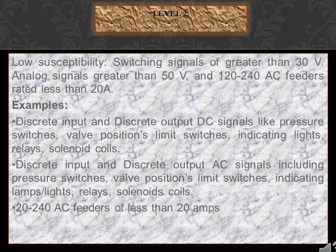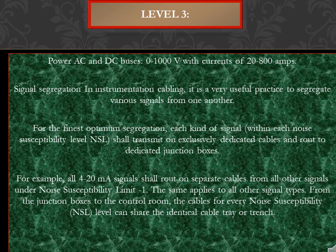Level 2 also includes 120 to 240V AC feeders rated less than 20A. Examples include discrete input and output DC signals such as pressure switches, valve positions, limit switches, indicating lights, relays, and solenoid coils, as well as discrete input and output AC signals including 120 to 240V AC feeders of less than 20 amps.